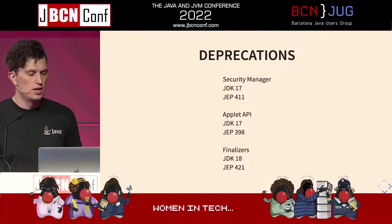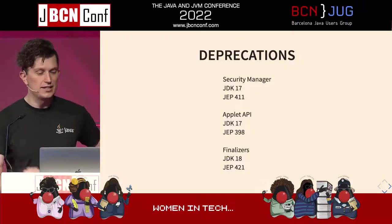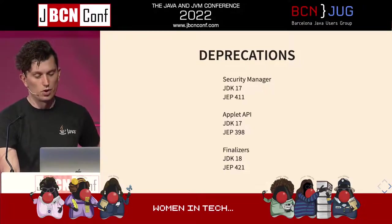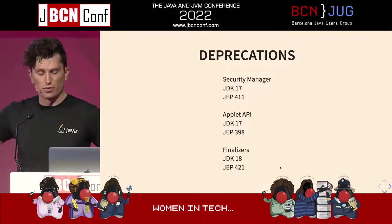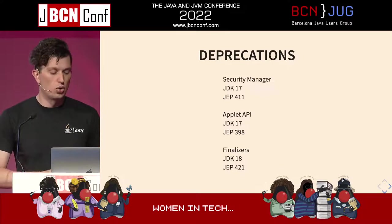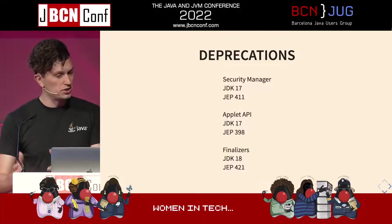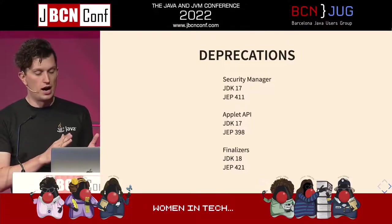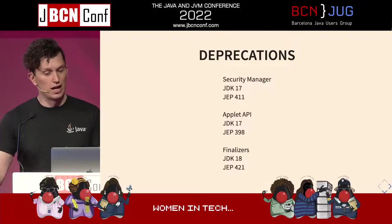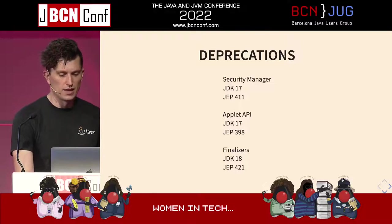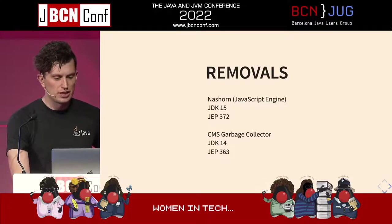In JDK 18, finalizers were also deprecated for removal. These are all just deprecated for removal — they haven't been removed yet, and it's probably going to be several years. If you are using the security manager, Applet API, or finalizers, move off of them as fast as possible, but it won't be removed in JDK 19 or anything like that.